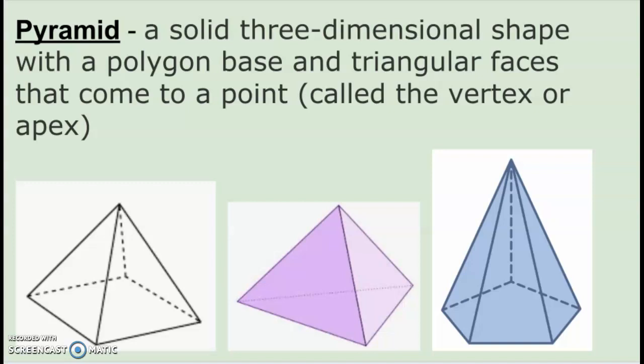The first one on the left here is an example of a square pyramid. That's because the base is a square and it will have four triangular faces or sides. The middle one is an example of a triangular pyramid. That means the base or the bottom of the pyramid is in the shape of a triangle and it will have three triangular faces.